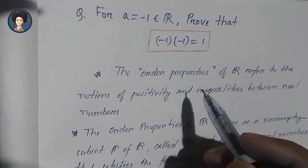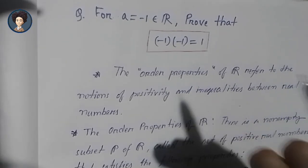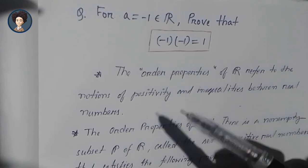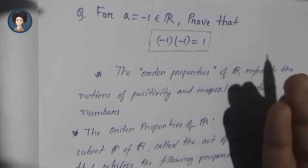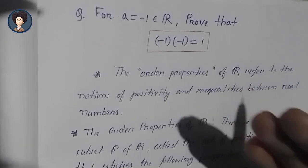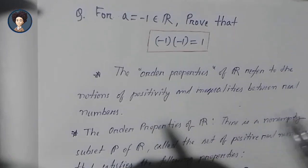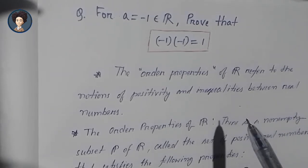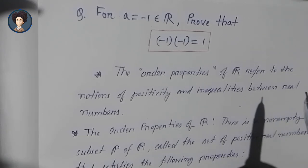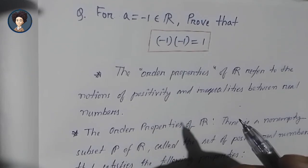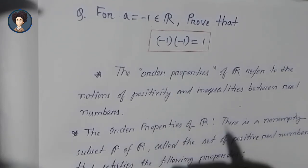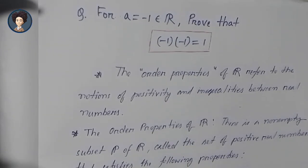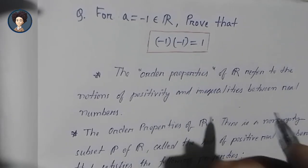Before we prove this, we need to know some basic concepts and definitions — specifically, where this proof comes from. We need to know the order properties of ℝ. The order properties of ℝ refer to the notion of positivity and inequalities between real numbers.